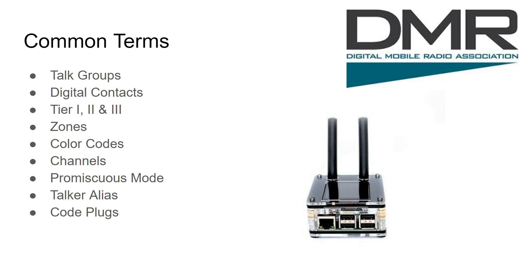You'll hear people talk about tier one and tier two radios — most amateur work is done at Tier 2. Zones are like banks on your older FM radio. I program two zones: one called 'home' and one called 'work,' because the repeaters I can reach are different in each location. That way I can segment my channels by zone, scan those zones, or scroll through them to organize my channels more easily.